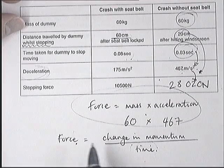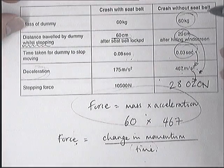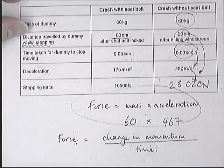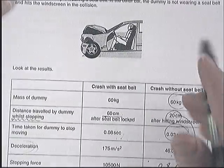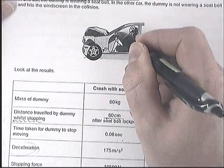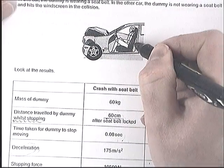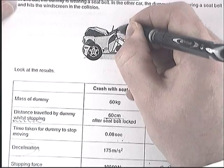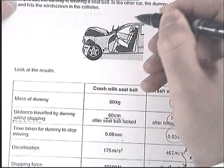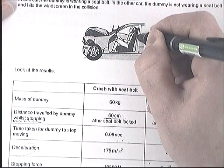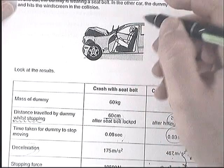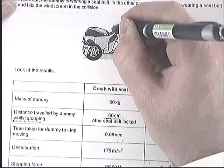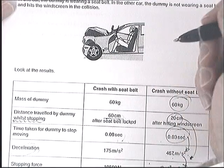Without the seatbelt, you carry on at the same speed until you hit the windshield. Rather than the seatbelt slowing you down over a longer distance and taking a long time, the windshield slows you down over a much shorter distance and in a very short time — producing a much greater force.